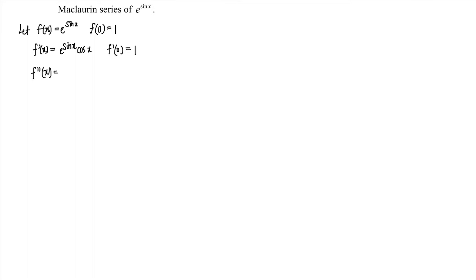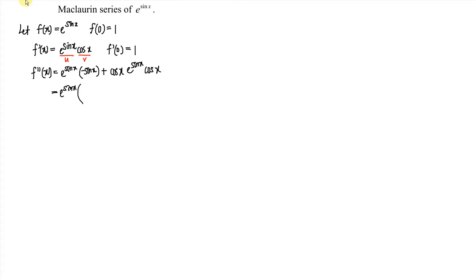Now we compute the second derivative, so we have to apply the product rule. We let u = e^(sin x) and v = cos x. Applying the product rule gives u dv/dx plus v du/dx. Differentiating e^(sin x) again gives e^(sin x) · cos x, so we get e^(sin x) times (cos²x minus sin x).